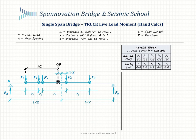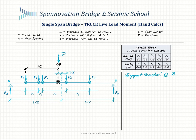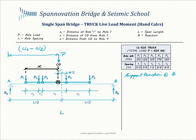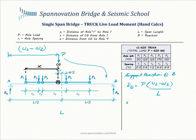The next step is to determine the support reaction at B. We focus on the CG where the entire load P sits — a point load on a simple span of length L. The distance of this load from the start of the bridge is L/2 minus A/2. The reaction RB therefore equals the total load P times (L/2 minus A/2), divided by the total span length L.